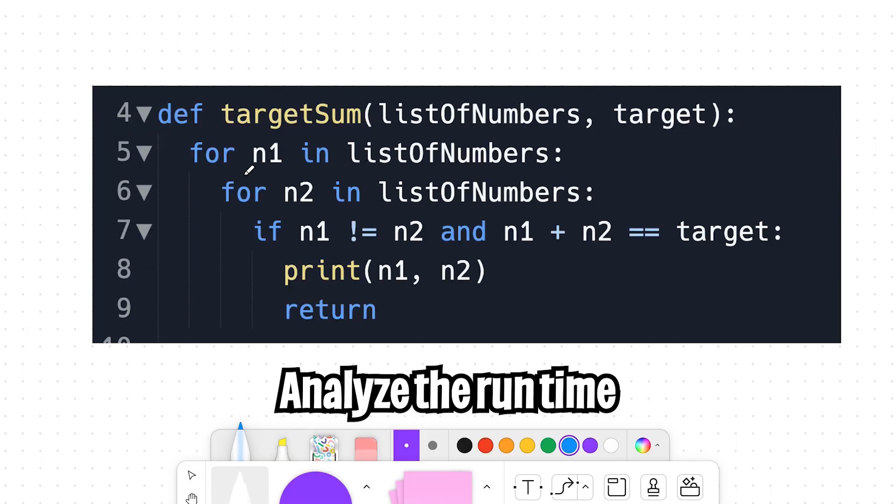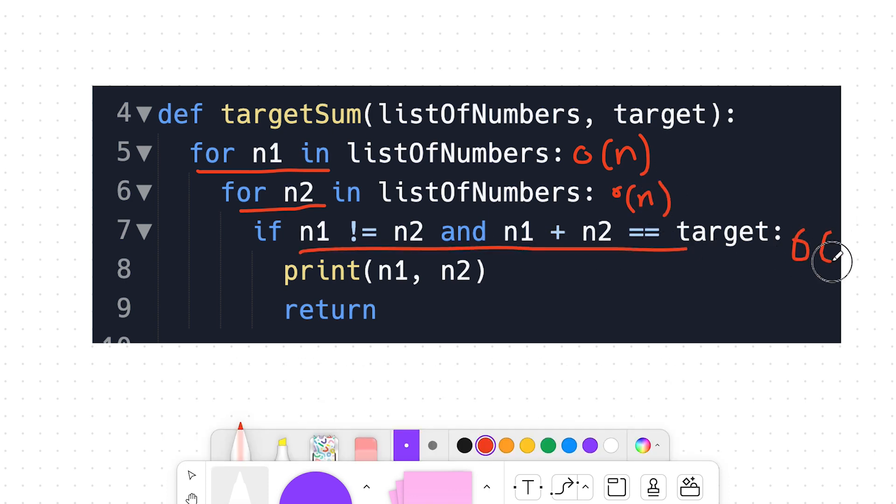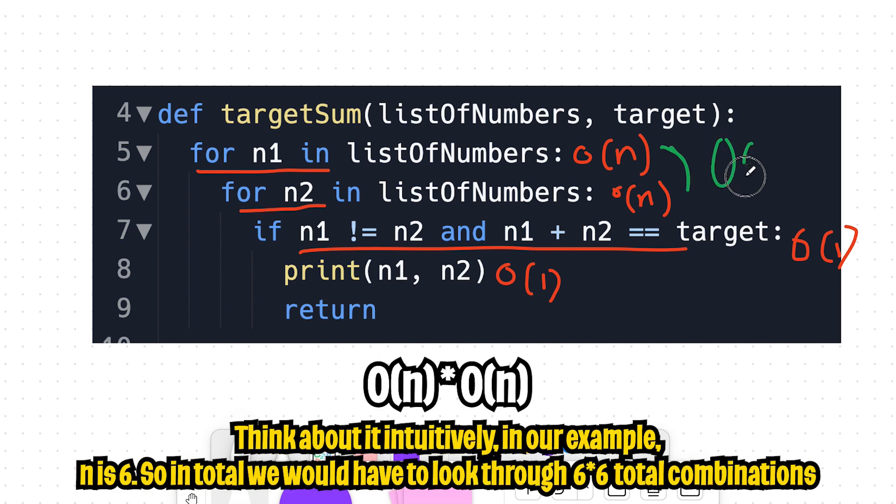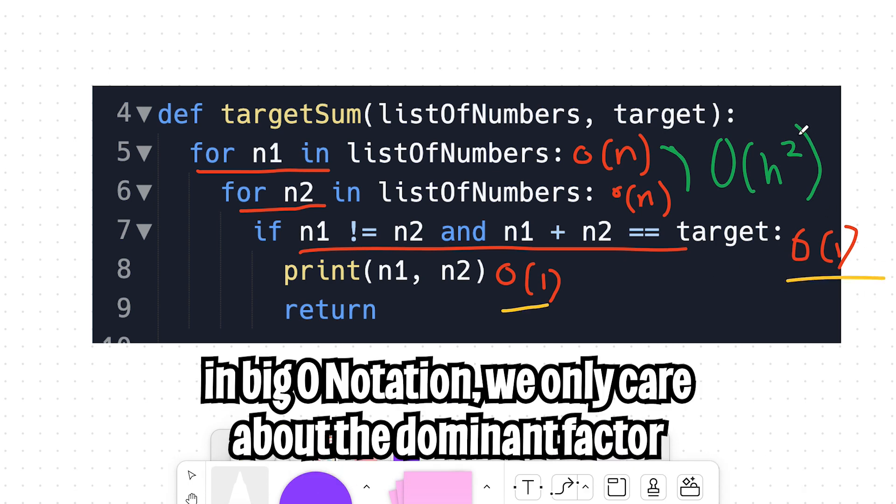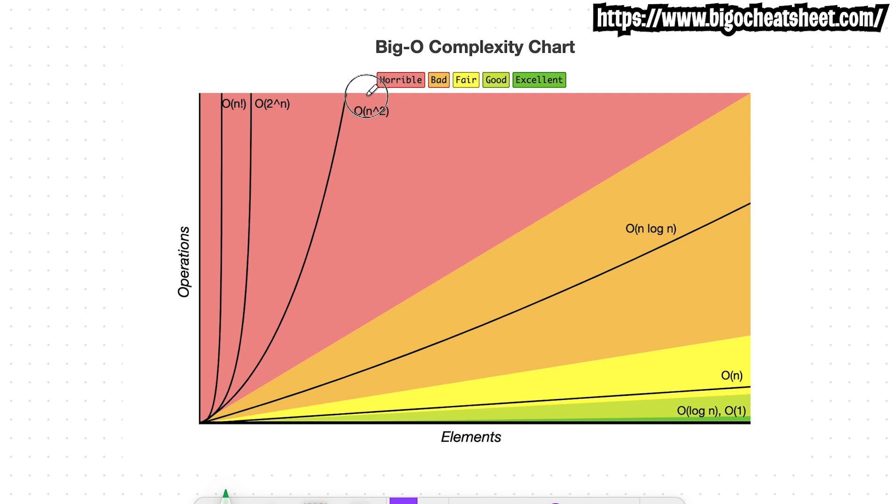Now let's analyze the runtime of this code. So here we have a for loop, which is O of N. Then we have another for loop, which is O of N. Then we have this if statement, which is just O of 1. And here we have a print statement, which is just O of 1. So since this is nested, this is basically O of N squared. And since these are just O of 1, it doesn't affect the dominant factor, which is O of N squared. So basically our solution runs in O of N squared time. And now let's take a look at the graph. As you can see, O of N squared is horrible. Do you guys think we can do better?